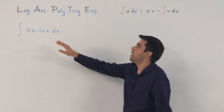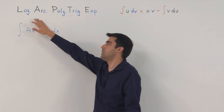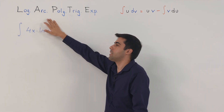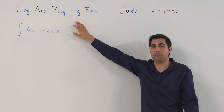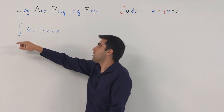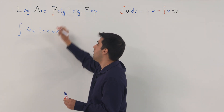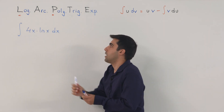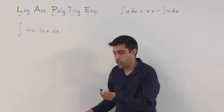To do this, there is a shortcut called LAPTE in the precedence of choosing u. L stands for logarithmic functions, A stands for inverse trigonometric functions, P stands for polynomials, T stands for trigonometric functions, and E stands for exponential functions.